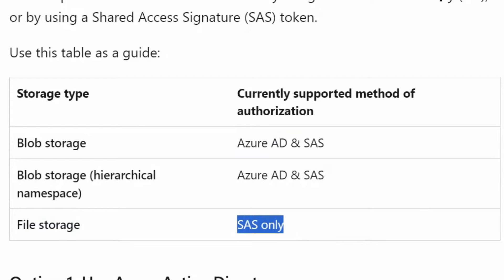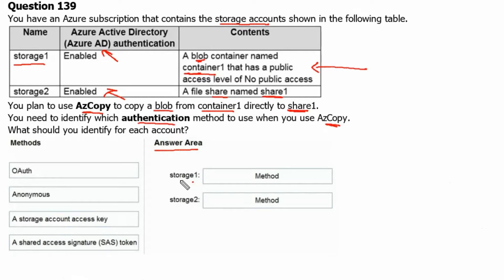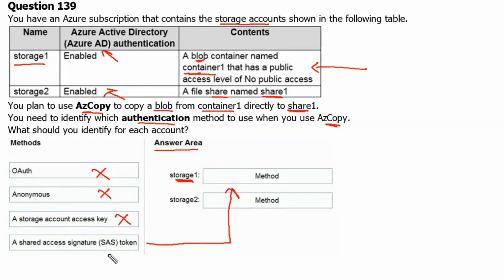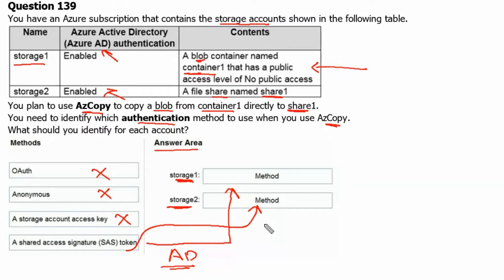Back to the question. For storage account 1, the correct answer is that we can authorize using Azure Active Directory, and SAS is also available as an option. For storage account 2, which is the file share storage account, we can only use the SAS token authentication method.